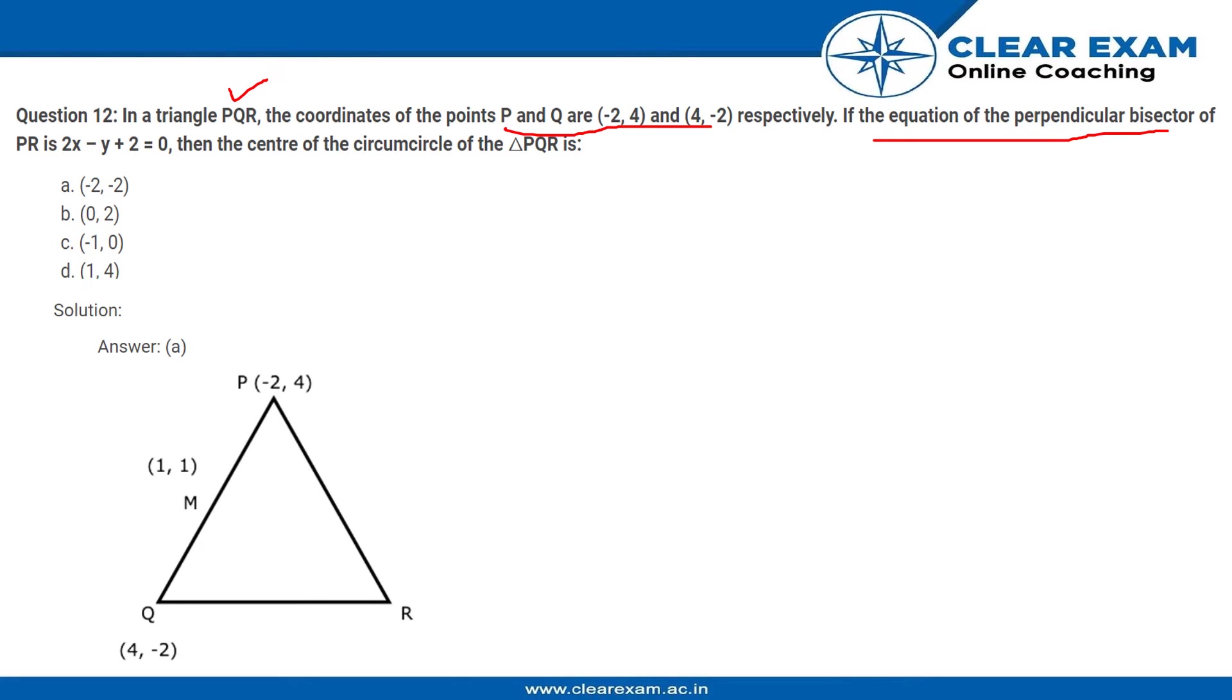So this is the triangle over here. We have Q, we have P, we have the midpoint of PQ as (1, 1) which we write as M, and we have R.